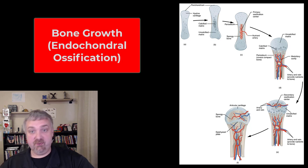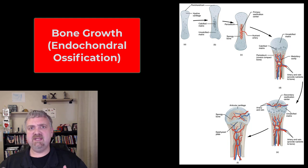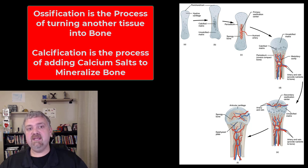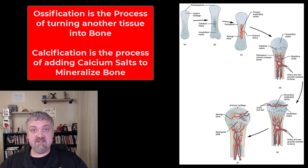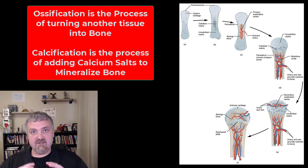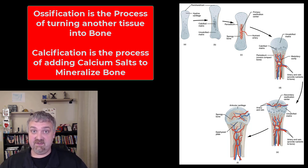Hey everybody, Dr. O here. Let's talk about bone growth. Bone growth occurs until you reach skeletal maturity, maybe between the ages of 23 and 25. The process of turning another tissue into bone is ossification — or specifically, osteogenesis, the creation of bone. We start with a cartilage framework and turn it into bone. Calcification is the adding of calcium salts that mineralizes bones during this ossification process. That's the difference between ossification and calcification.